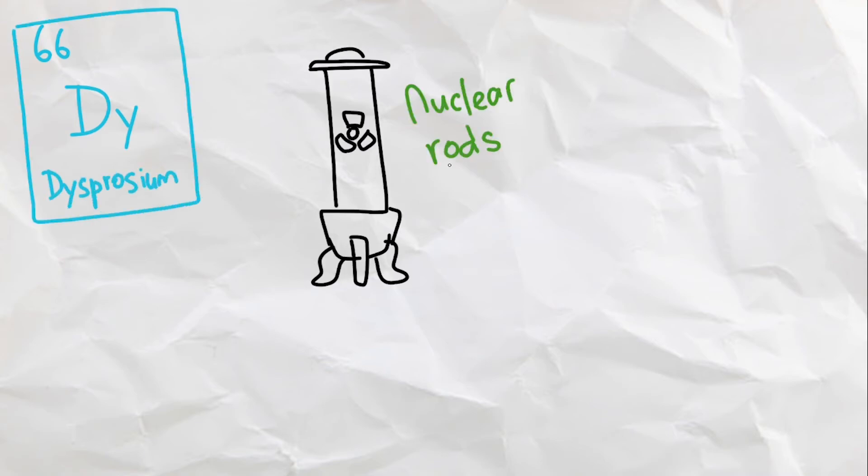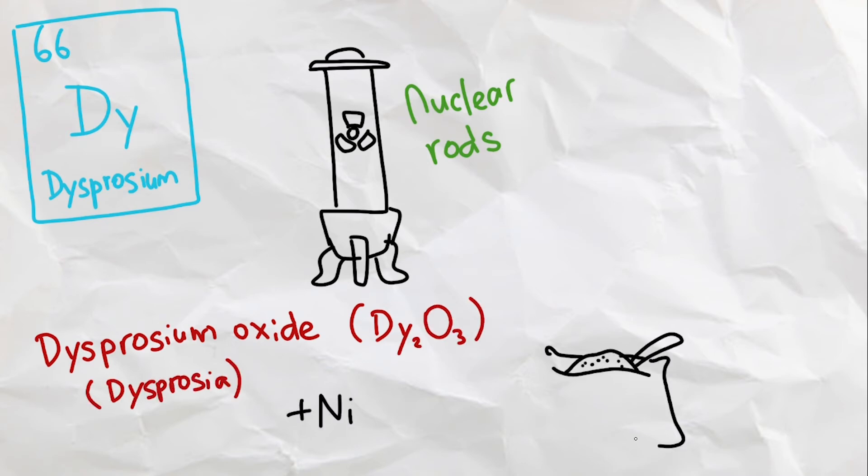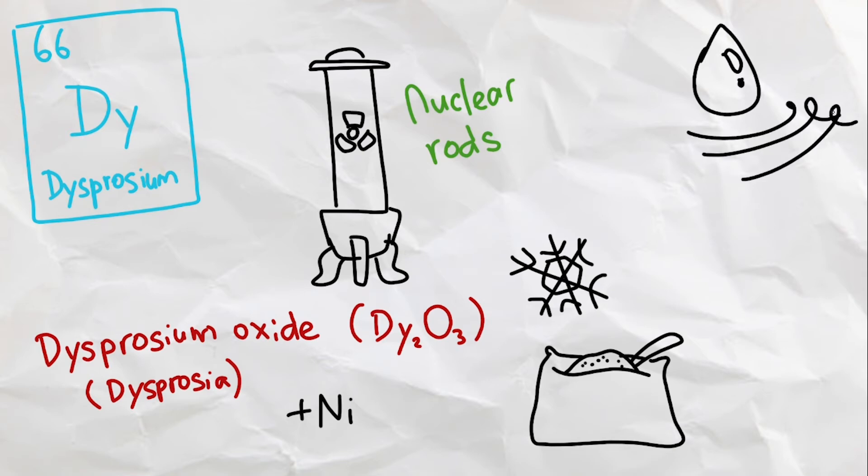Next, we have Dysprosium, a soft metal that is commonly used in nuclear rods. Dysprosium oxide combined with nickel makes a cement used to cool nuclear reactor rods. This element isn't used often since it reacts easily with water and air.